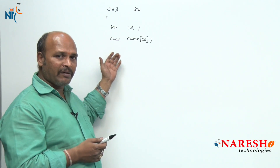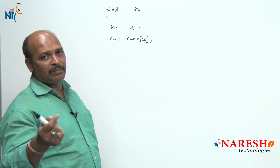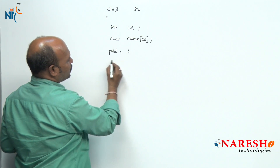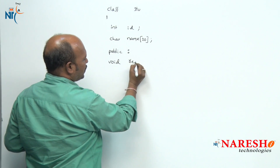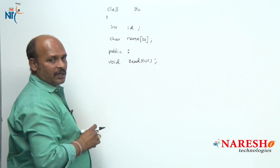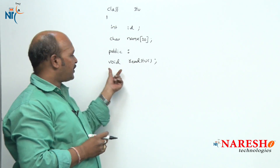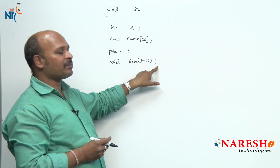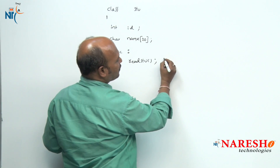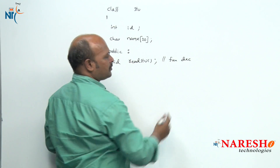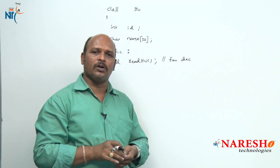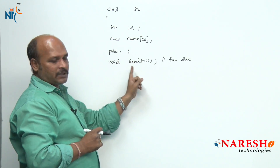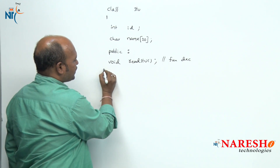To access private data we must have at least one public member function. Now I am going to define a public member function: 'public: void readStudent();'. Here void indicates the return data type, readStudent is the function name, and the semicolon makes this a function declaration, which is also called a function prototype.